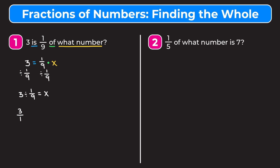When we're dividing fractions we use keep-change-flip. We keep three over one as it is, change division to multiplication, and flip our second fraction upside down — so you're multiplying the first fraction by the reciprocal of the second. Now we multiply straight across: three times nine is 27, and that's over one, so we leave it as 27. We get that x is equal to 27, meaning three is one ninth of 27.